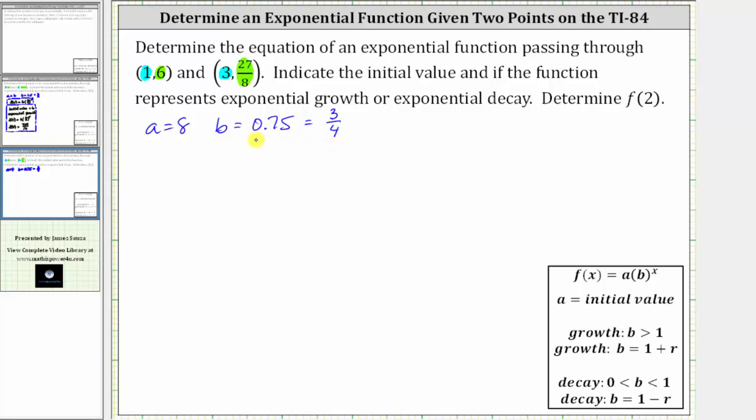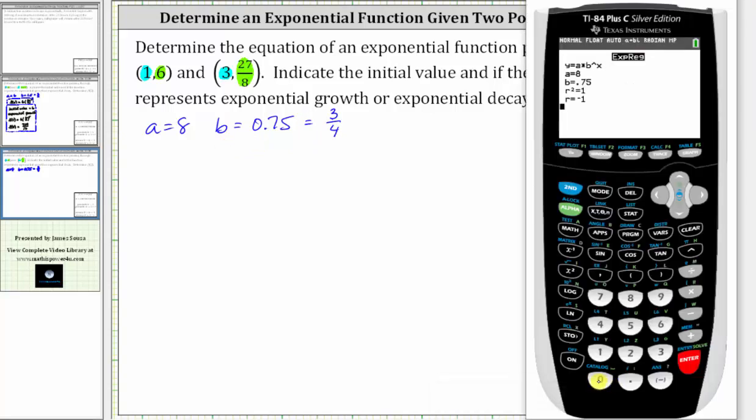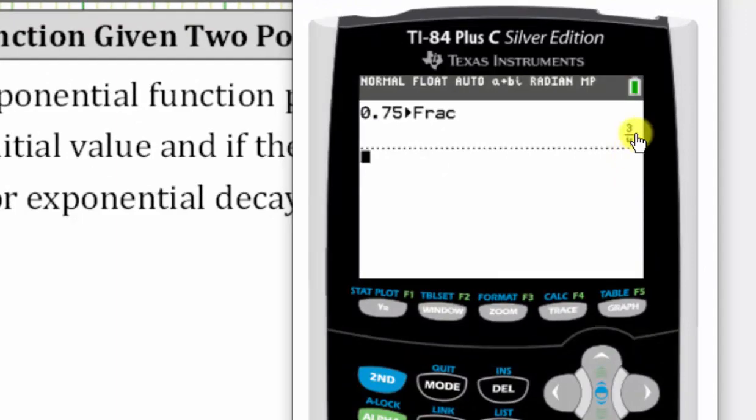And for a quick review, to convert a decimal to a fraction on the TI-84, we enter the decimal, press math, enter, enter, which does give us 3/4.